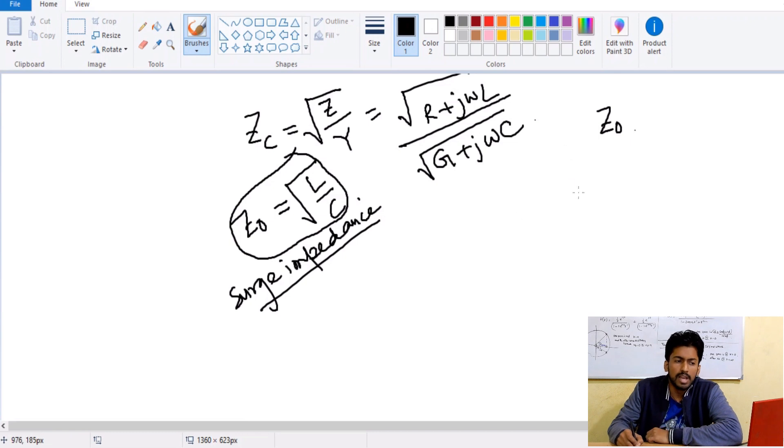Now what about surge impedance loading? It means what we are here having some load which is equivalent to this part, means the receiving end will have Z naught connected to the receiving end of the transmission line.